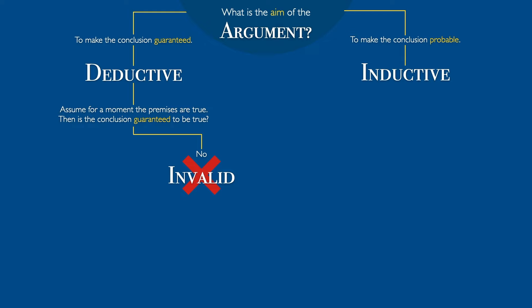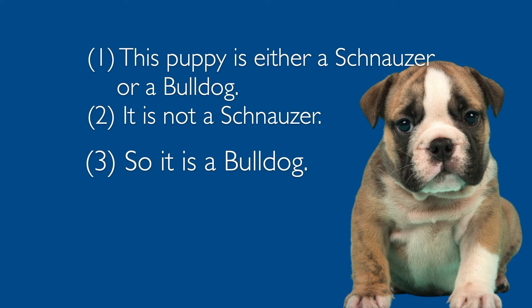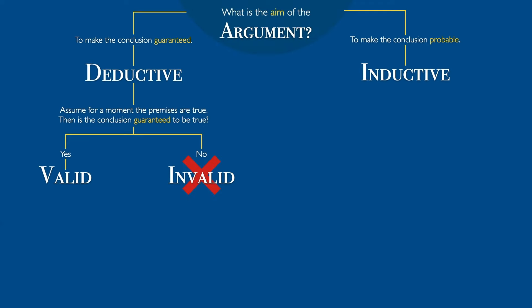But sometimes when you assume the premises are true, you can just see that the conclusion therefore has to be true. This is valid reasoning. For instance: this puppy is either a schnauzer or a bulldog; it's not a schnauzer; so it's a bulldog. If it really were true this puppy is either a schnauzer or a bulldog, and if it really were true that it's not a schnauzer, then it would just have to be a bulldog. This argument is valid — it succeeds in its aim of a guaranteed conclusion.